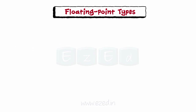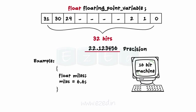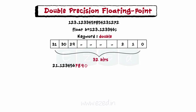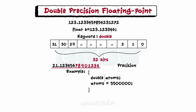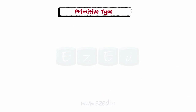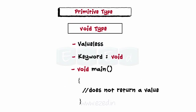The keyword float is used to declare floating point variables. They are stored in 32 bits with 6 digits of precision on 16-bit machines. For example, variable miles is declared of float type and assigned the value 6.6. When the accuracy provided by float is not sufficient, the number can be defined as double precision floating point using the keyword double, which uses 64 bits of storage with a precision of 14 digits. For example, variable atom is declared of type double and initialized with the value 5.5 million. When more accuracy is needed, long double is used. The last primitive type is void — void is valueless and a function is said to be void if it does not return any value to the calling function.